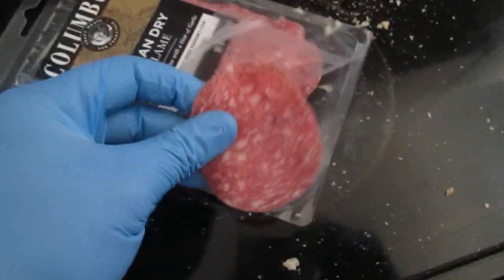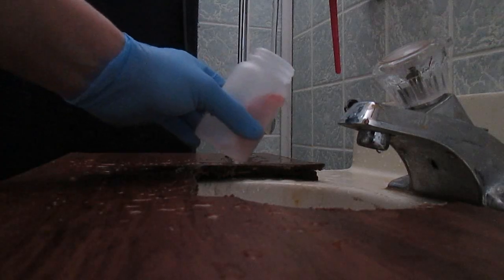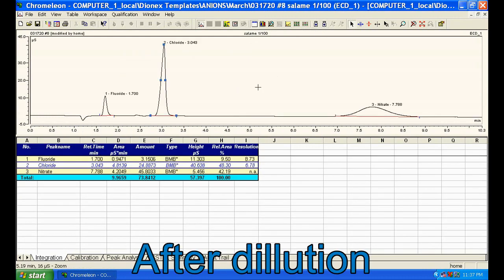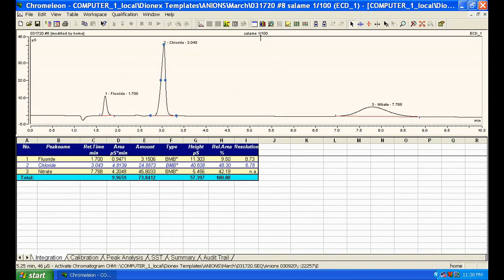The salami was digested in DI water and tumbled overnight, and the results were somewhat surprising. Because of salt, large amounts of chloride were expected. But I had to do 100 dilution for nitrate, nitrite, and in retrospect, this might have been too much. But it's there though.